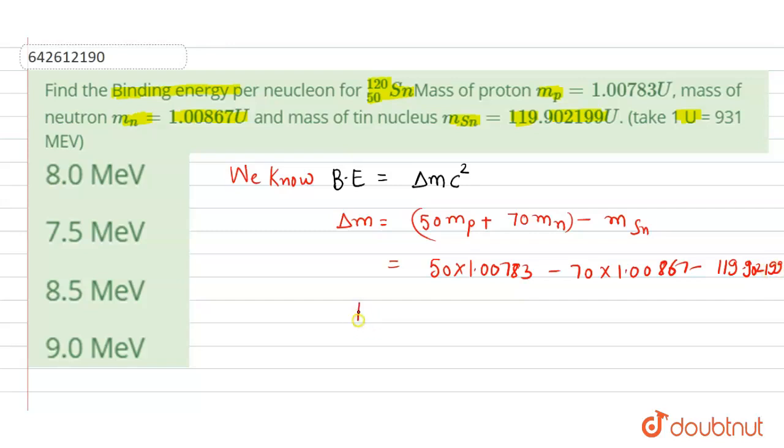So after solving this value, binding energy will be equal to delta m c squared. This value will be equal to delta m into c square. So the value of delta m multiplied with c squared will become 1020.5 using the value of 1u.